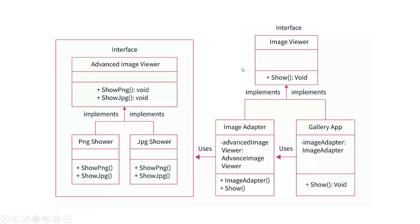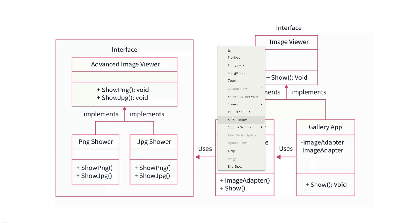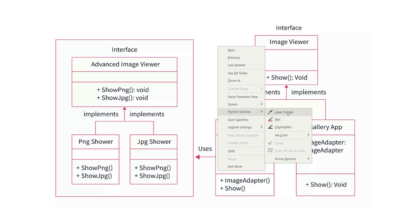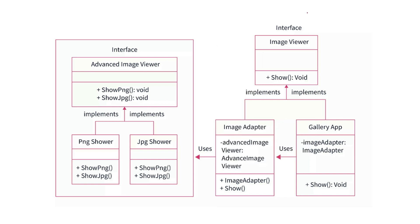Let's try to understand this adapter design pattern using this UML diagram. I have one interface here and a second interface here. This is my basic interface and this is my advanced interface. I will come to these interfaces in detail when I go through the code.